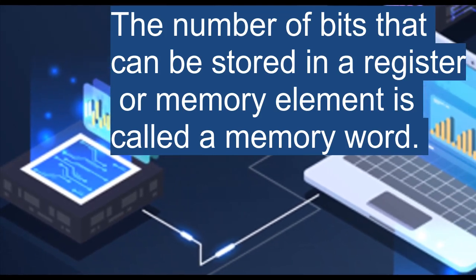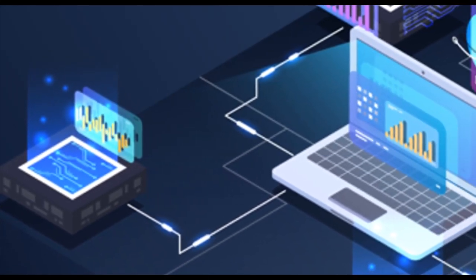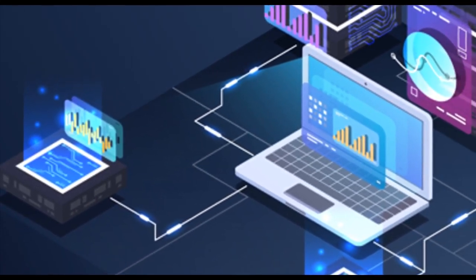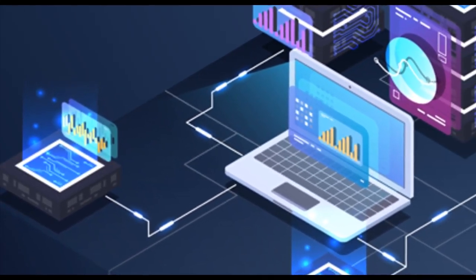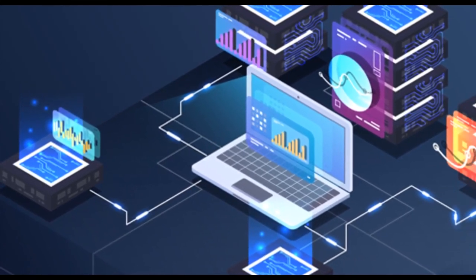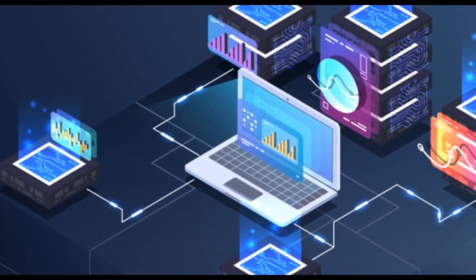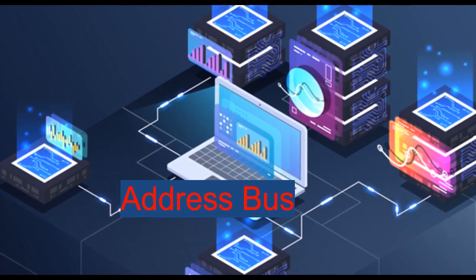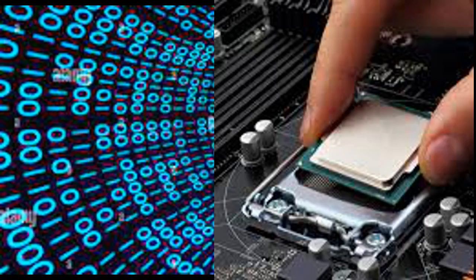Address bus: It carries the address, which is a unique binary pattern used to identify a memory location or an I/O port. For example, an 8-bit address bus has 8 lines and thus it can address 2^8 equals 256 different locations. The locations in hexadecimal format can be written as 00h to FFh.